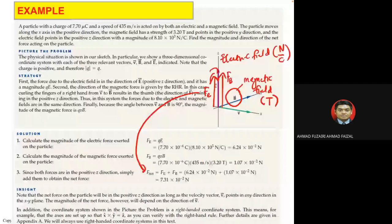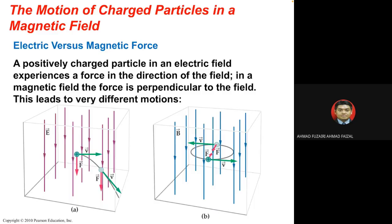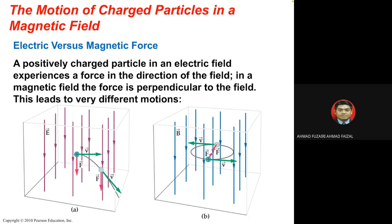Now we look at the motion of charged particles in a magnetic field. For a positive charge moving in an electric field going from top to bottom, the charge tries to follow the direction of the electric field, so moving from left to right it curves downward — becoming a curved line.